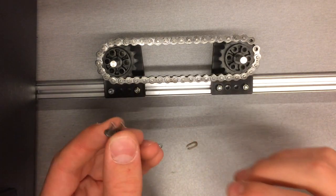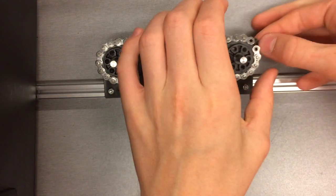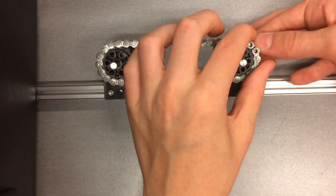In order to complete the length of chain, you will use a master link. The master link will link the two ends of chain together to make a complete loop.